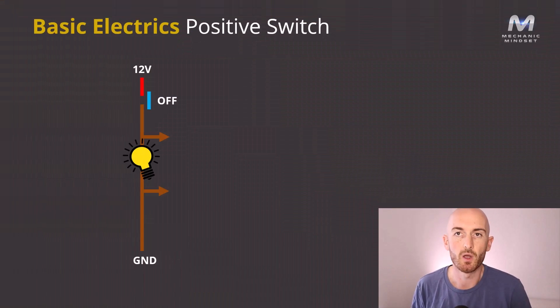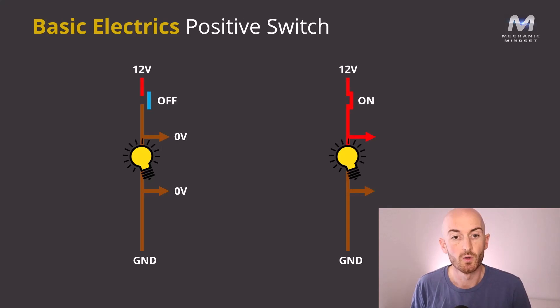Taking that basic bit of knowledge, then we can have a look at a positive switched circuit. So on a positive switch circuit, when the switch is off, we would have zero volts on the power side of the bulb, and we would also have zero volts on the ground side of the bulb. When we turn that switch on, we then get 12 volts at the power side, and then zero volts at the ground side. I think that's quite easy for most people to understand.